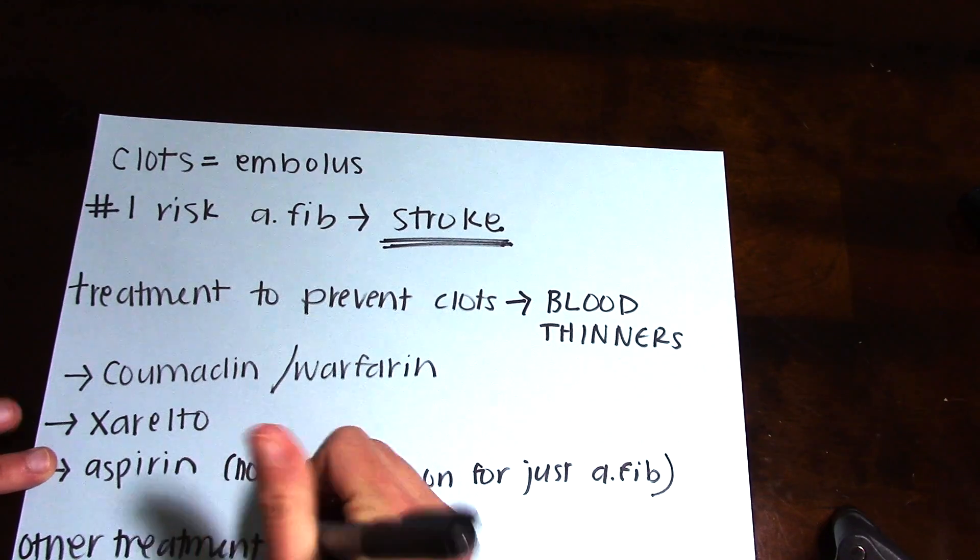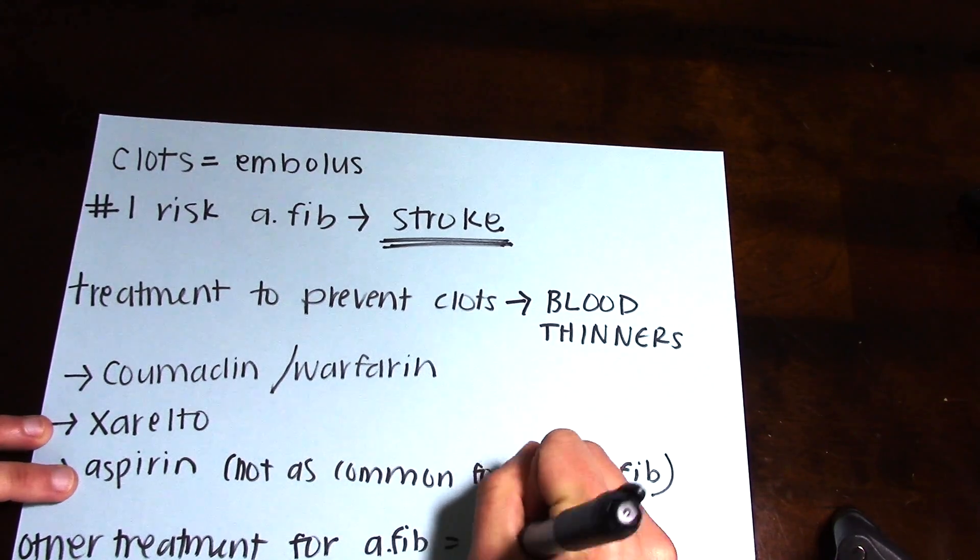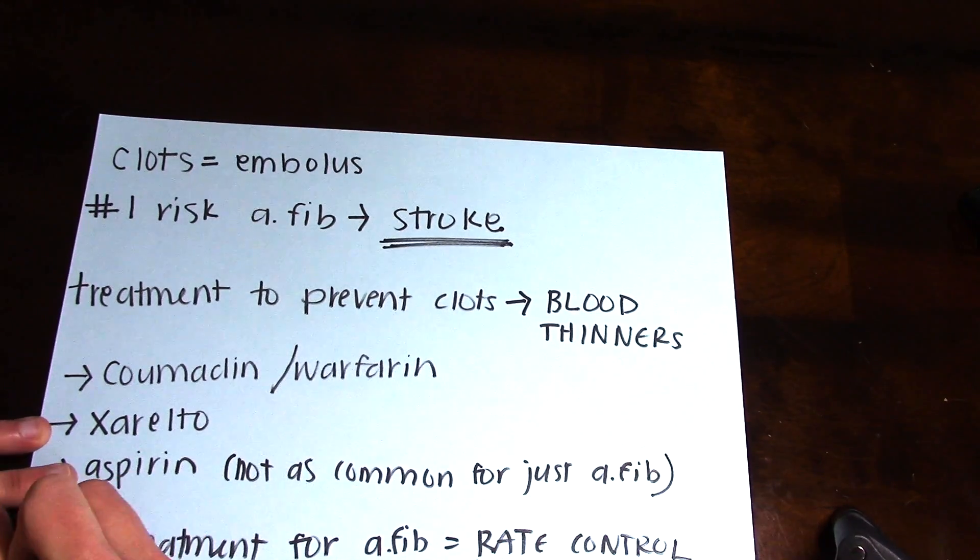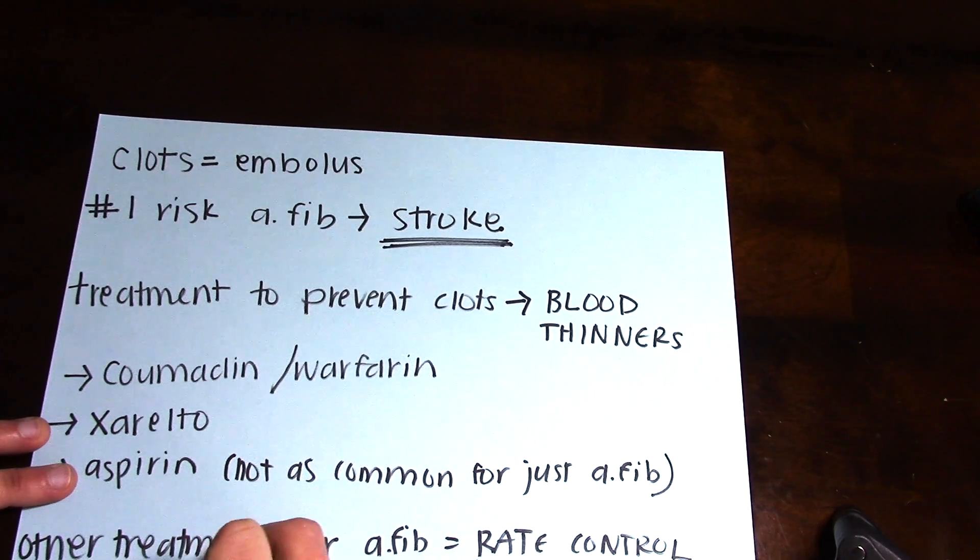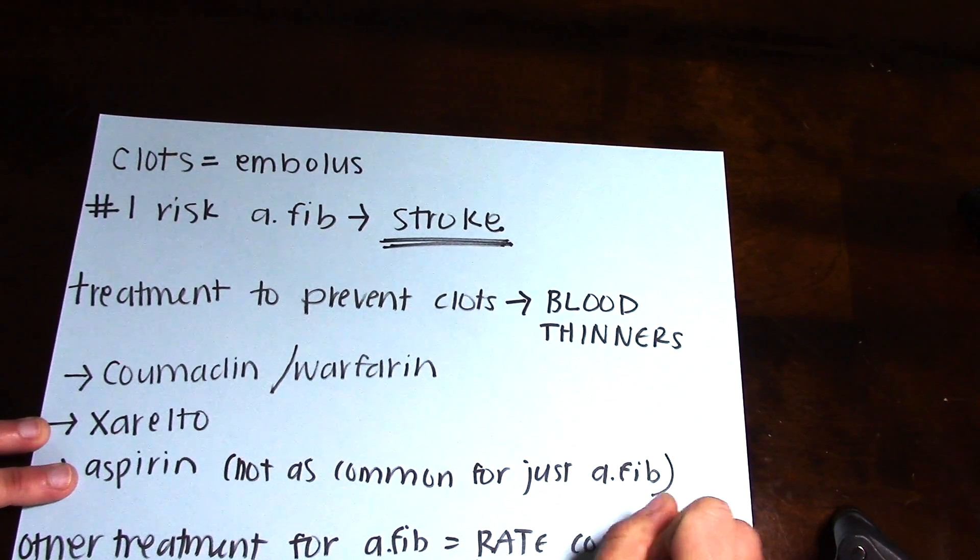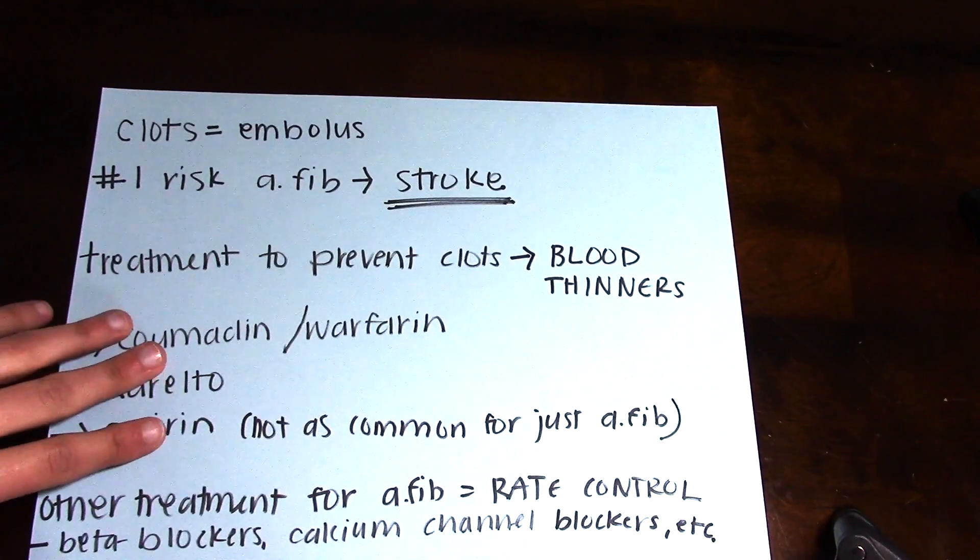Other treatments for AFib include medications for rate control such as beta blockers, calcium channel blockers, and basically any medication that lowers your heart rate. Most of these medications tend to lower your blood pressure too.